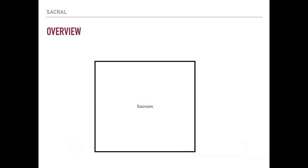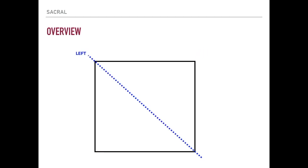Now, having gotten through lesson five, there are two really important axes you have to be familiar with: the right oblique axis and the left oblique axis. The way you name the axis is about which corner it goes through on the top. If it goes through the top right corner it's a right oblique axis; if it goes through the top left corner it's a left oblique axis. Whichever top corner you go through, that's how you name it.